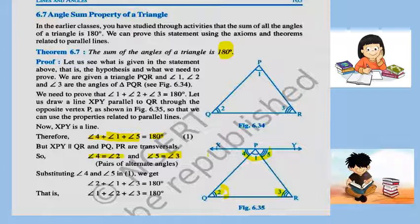Then we can write that XPY is a line. Angles 4, 1, and 5 lie on this line and therefore these three angles form a linear pair. The sum of a linear pair is 180 degrees, so all three angles form a linear pair and therefore their sum is 180 degrees.